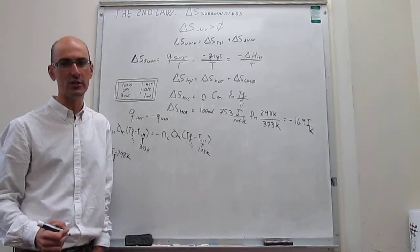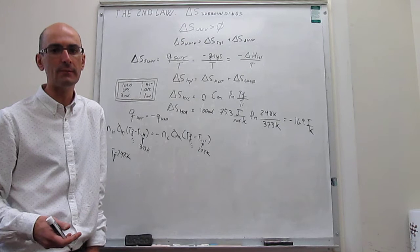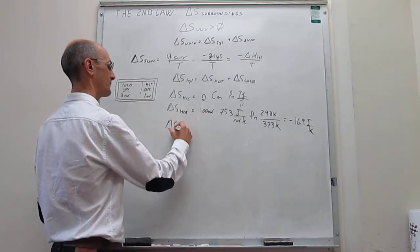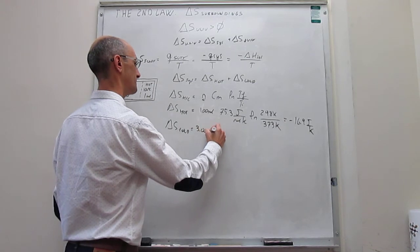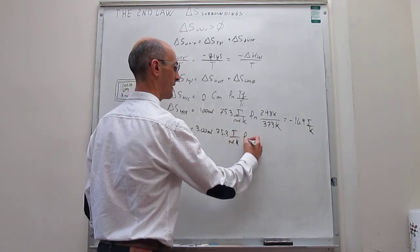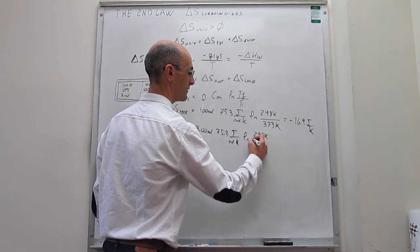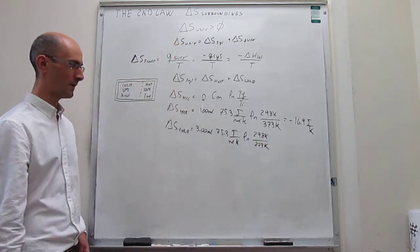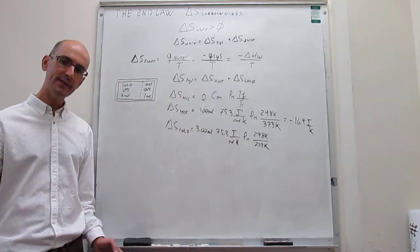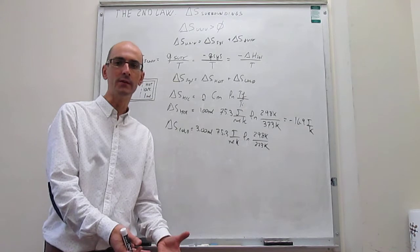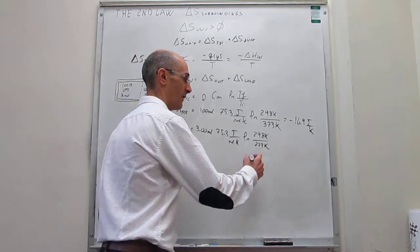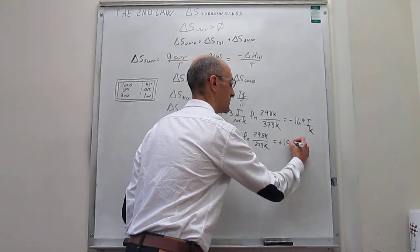For the cold water: ΔS_cold = (3 mol)(75.3 J/mol·K) × ln(298/273). Here we take the natural log of a number greater than one, which is positive — this makes perfect sense, since adding energy to cold water makes it more entropic. The result is +19.8 J/K, confirming the entropy of the cold water increases.